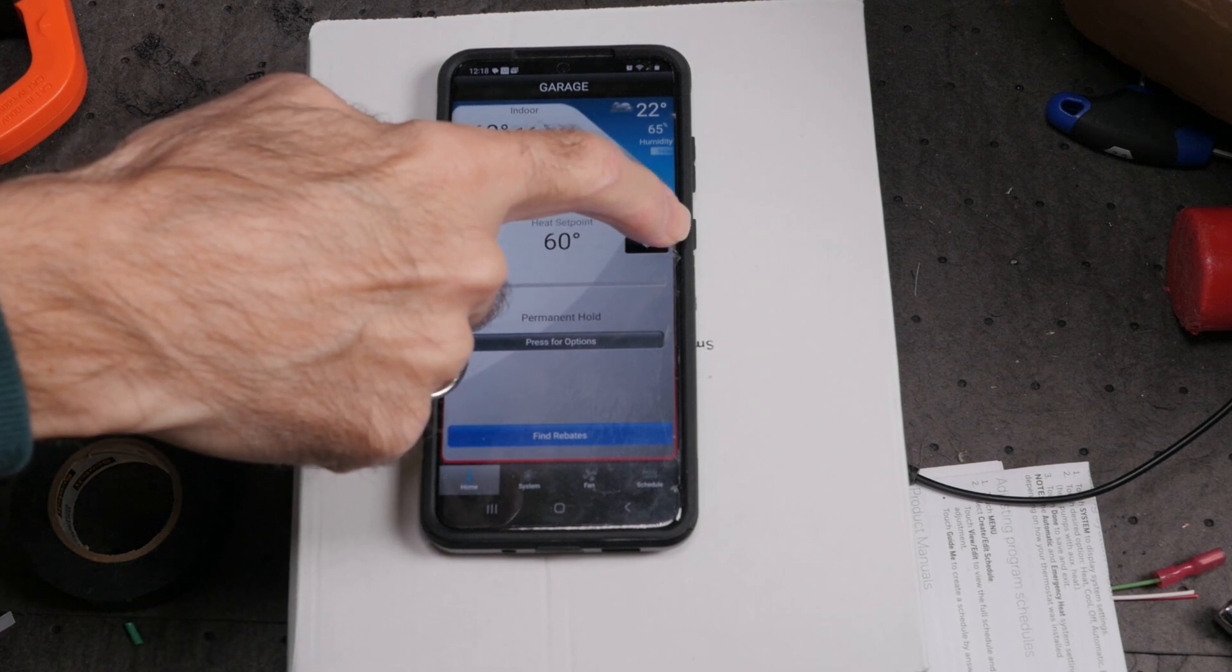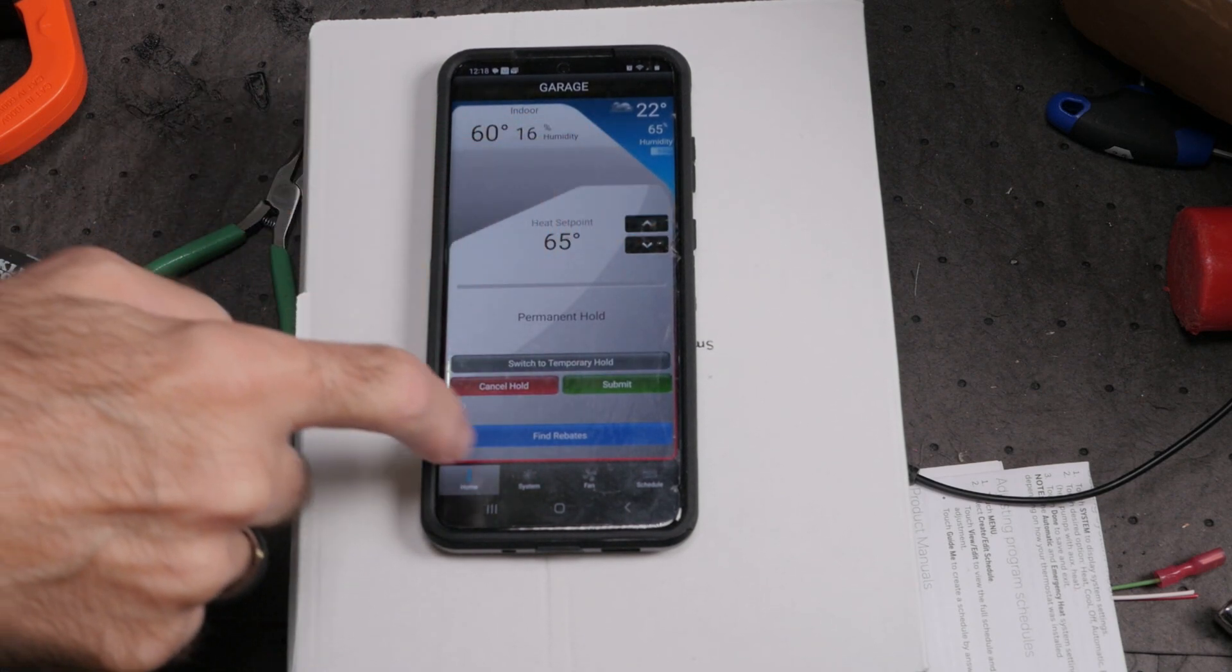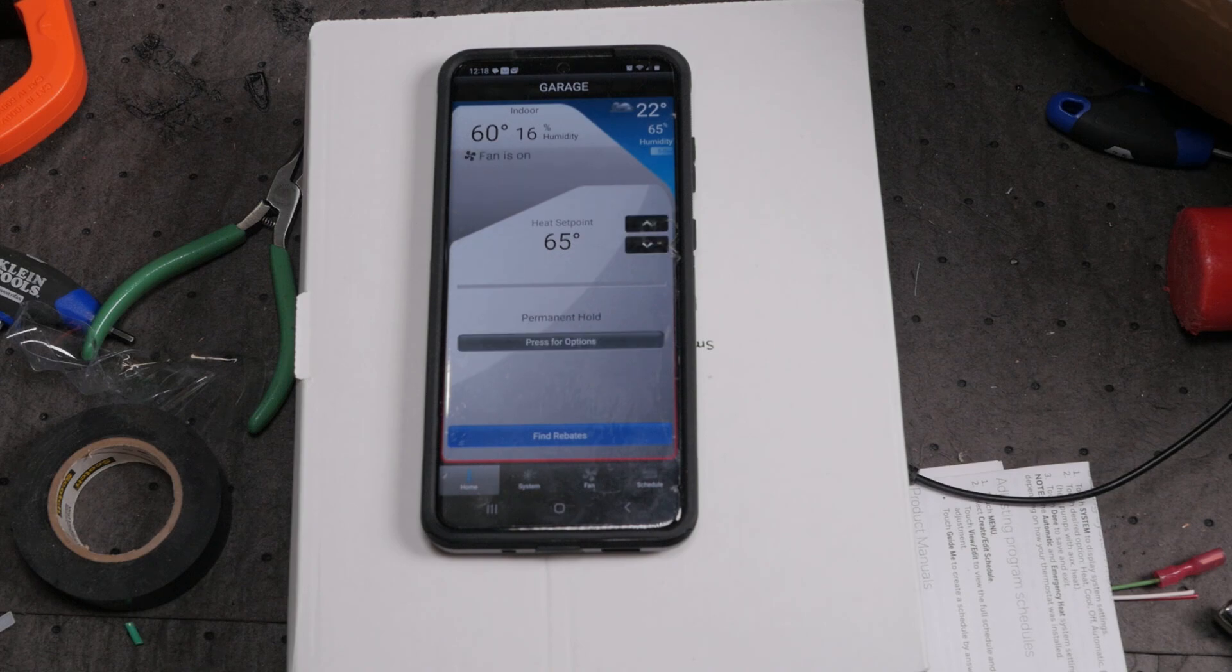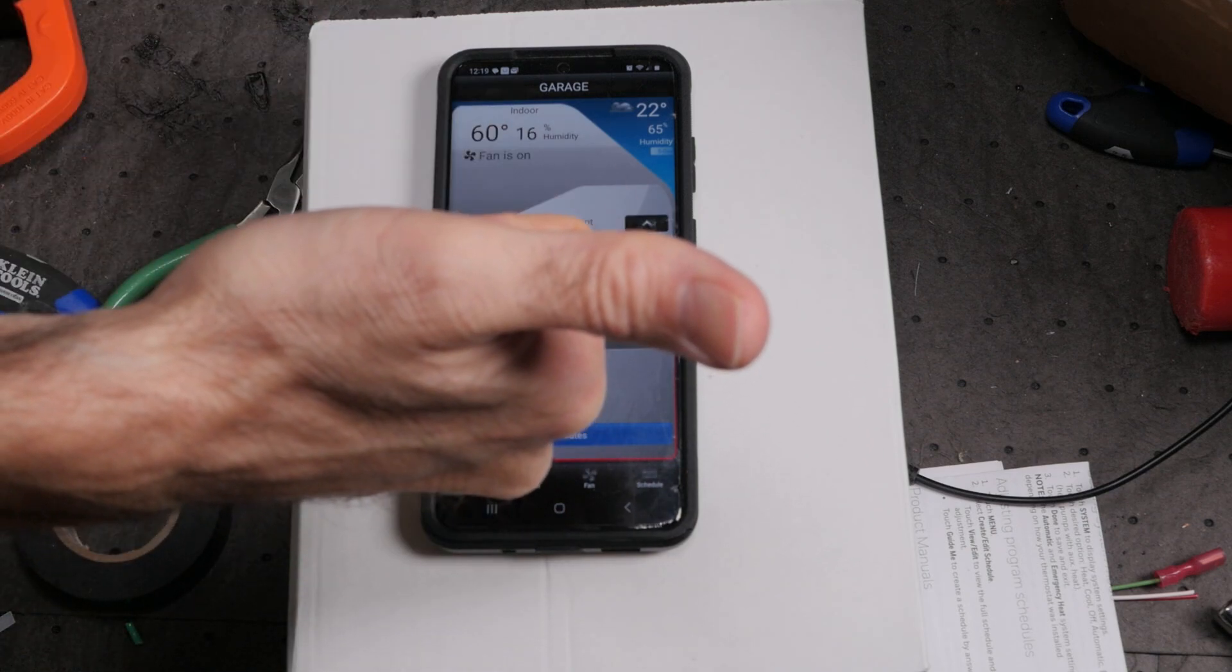And now, the primary reason for all this pain and effort. That satisfying click of the contactor says heat control is mine. Turns out that was not too much to ask after all. I now have complete control over the temperature of my workspace and I can do so directly from my phone, even if I'm relaxing on the warm shores of Fiji.